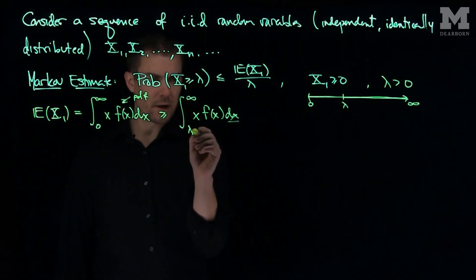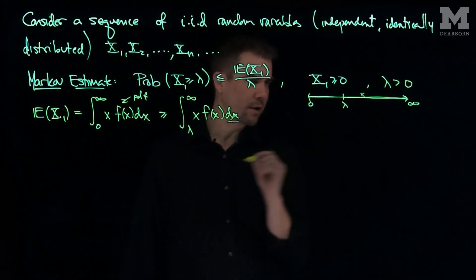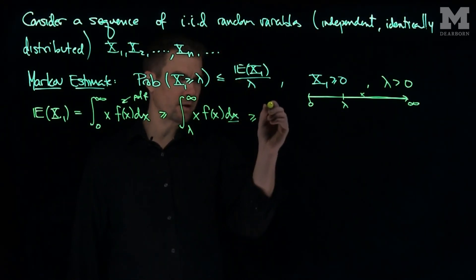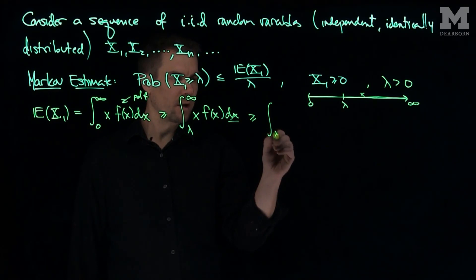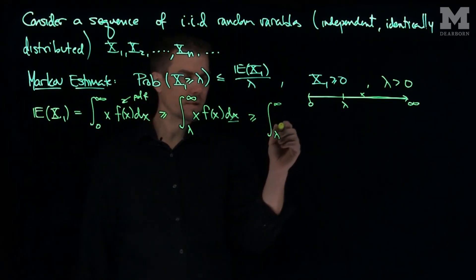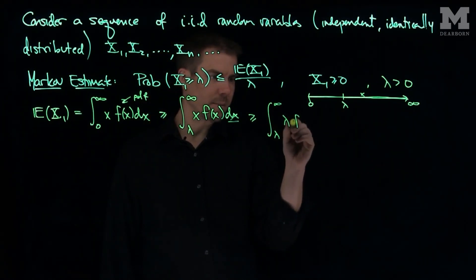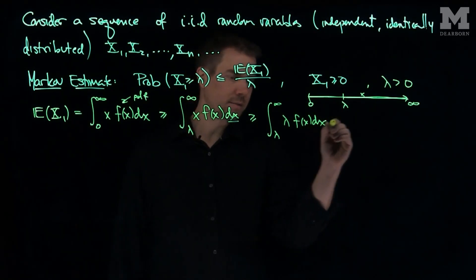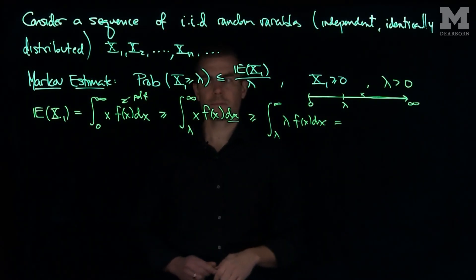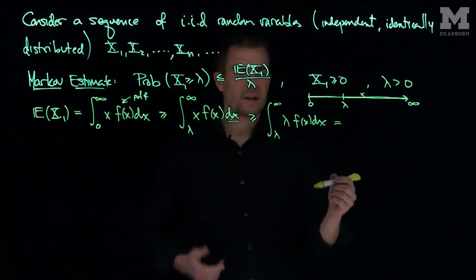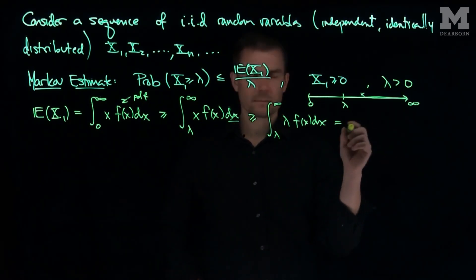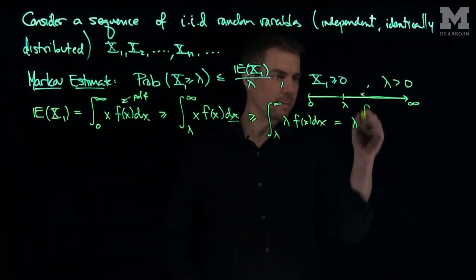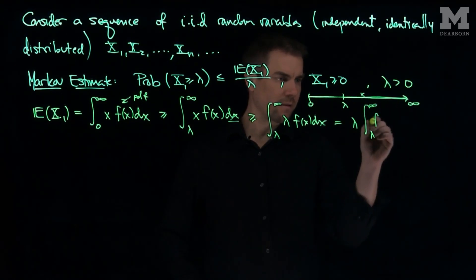Now, X in this region - if X is bigger than lambda, the values of X we're integrating over are bigger than lambda - so this is bigger than or equal to the integral from lambda to infinity of lambda times f dx. And so this is going to be lambda times the integral from lambda to infinity of f dx.